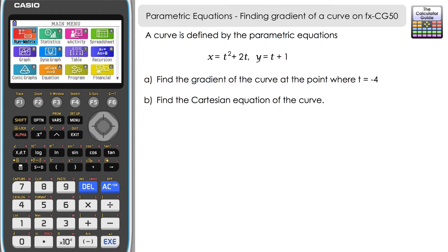Part b is going to essentially be a non-calculator method because it's heavily algebraic, but we are going to be able to use the FXCG50 to help check our final answer. We can certainly use the graph produced on the FXCG50 to help us with part a.